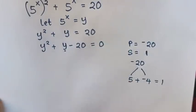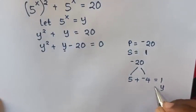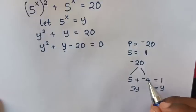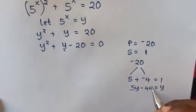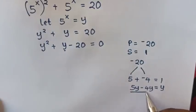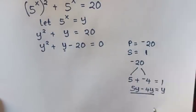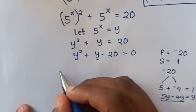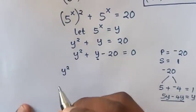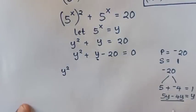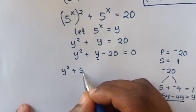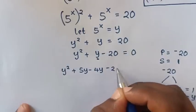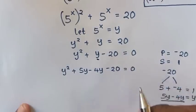To split the middle term, 1 times y is y, which equals 5y minus 4y. So we substitute 5y minus 4y in place of y. Our equation becomes y squared plus 5y minus 4y minus 20 is equal to 0.